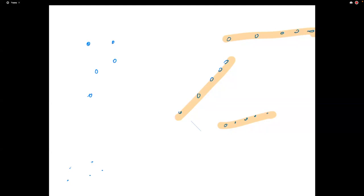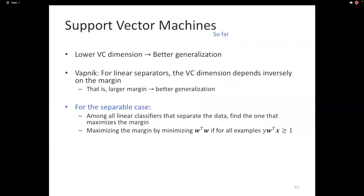If there are no more questions, we're going to jump back into support vector machines. In the last lecture we introduced SVMs. The story so far: a lower VC dimension leads to better generalization, and for linear classifiers, one way of reducing the VC dimension is to find a classifier with a larger margin, because a larger margin leads to lower VC dimension, which leads to better generalization. We focused on the separable case.